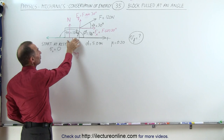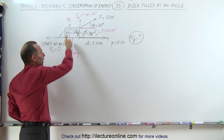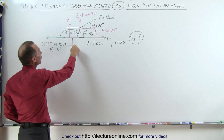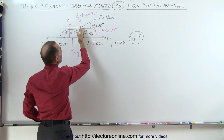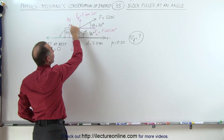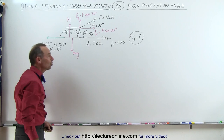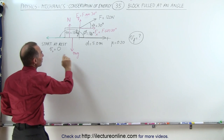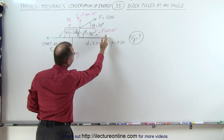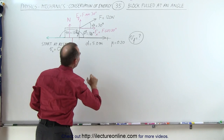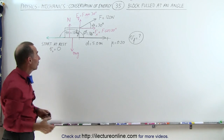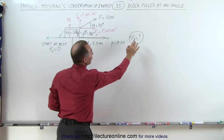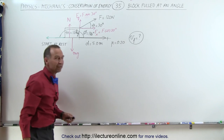The mass of the block is 10 kilograms. It has a weight pulling down towards the earth and a normal force pushing back. In this case the normal force is not going to be equal to mg because there's a component of the force pulling upward on the block. There's also a force of friction because the block is being pulled over a rough surface where the coefficient of friction is 0.20, a distance of 5 meters, and the block starts at rest with initial velocity at 0. We're asked to find the final velocity after the block has traveled 5 meters.